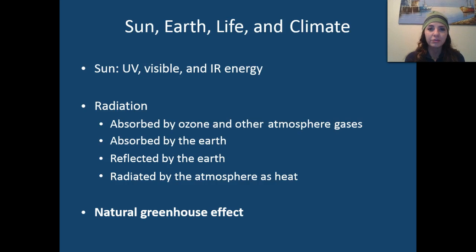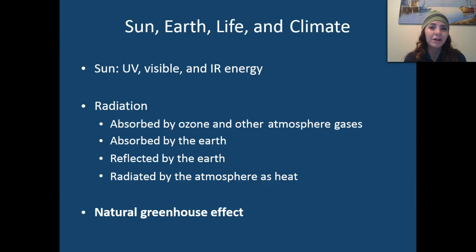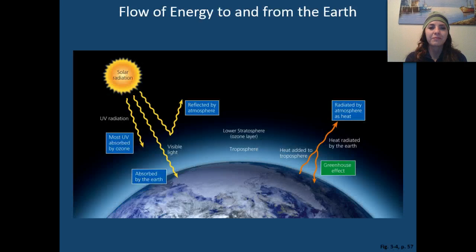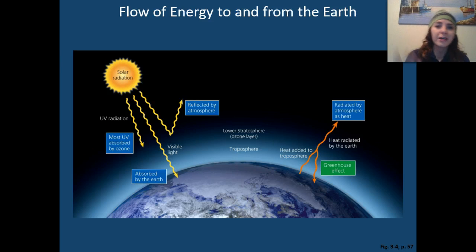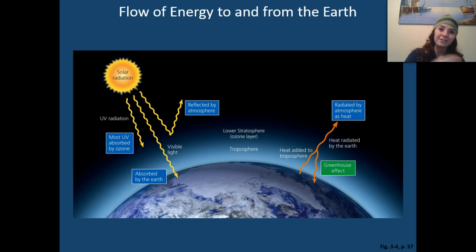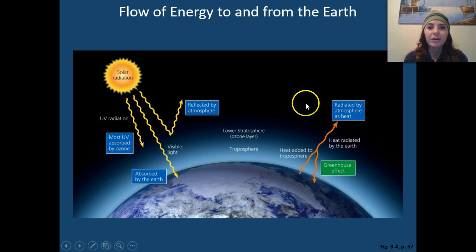This creates a natural greenhouse gas effect — that's probably a term you've heard in the past. Looking at the diagram, we have all kinds of different radiations coming from the sun, being radiated back out into space, being radiated from the atmosphere into space, or from the Earth into space. So all kinds of radiation going on, being reflected as well as absorbed.